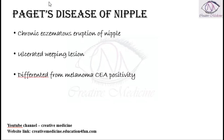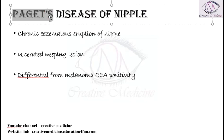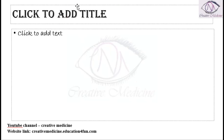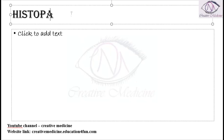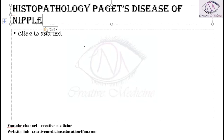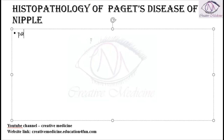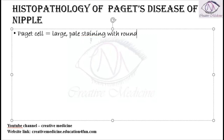Now, histopathology of Paget's disease of nipple. The Paget's cell is important — it is actually a large cell, pale staining, with round nuclei and large nucleoli.